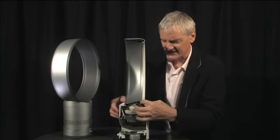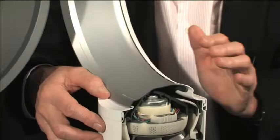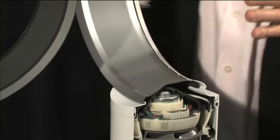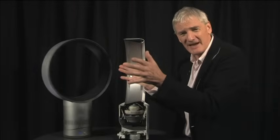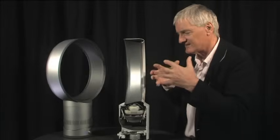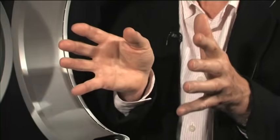Now in this case, what it does is create negative pressure. And the negative pressure sucks in air from here. So it's already multiplying itself. And then it goes down an expanding cone. As it goes down the expanding cone, it expands and creates a negative pressure here. So it adds more air coming through here. So we've already multiplied it several times already.